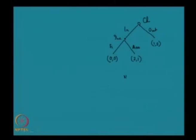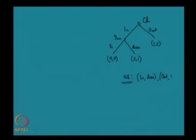In this setting, there were two Nash equilibria. One was 'in and accommodate,' and the other was 'out and fight.'